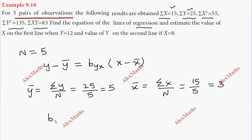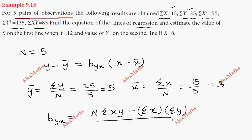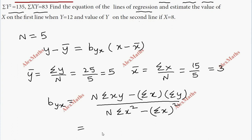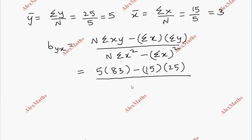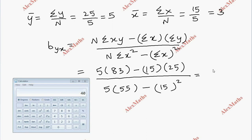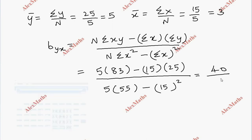Now we find b_yx using the formula: n into sigma XY minus sigma X into sigma Y, whole divided by n into sigma X square minus sigma X whole square. Substituting: n equals 5, sigma XY equals 83, so numerator is 5 into 83 minus 15 into 25. Denominator is 5 into 55 minus 15 whole square.